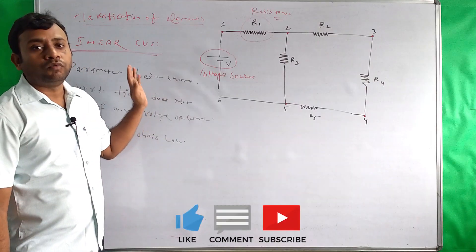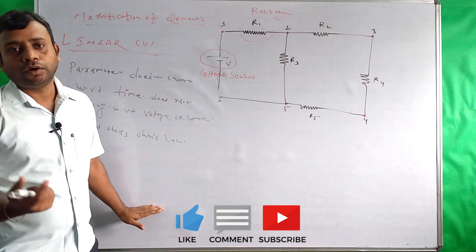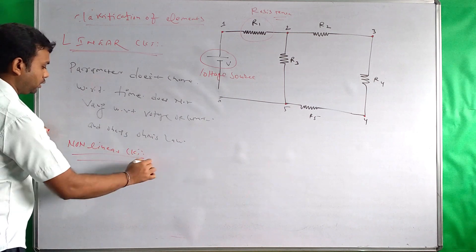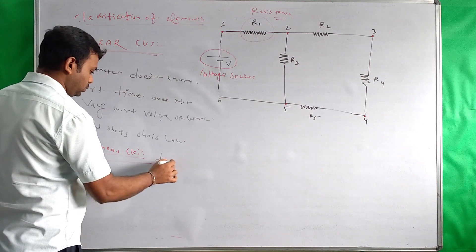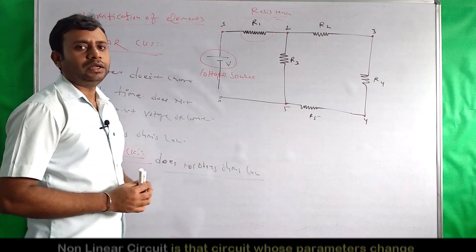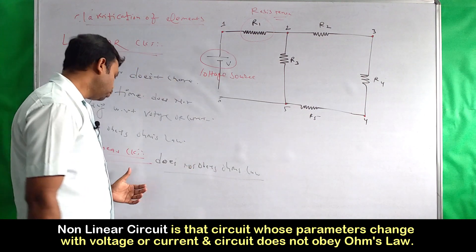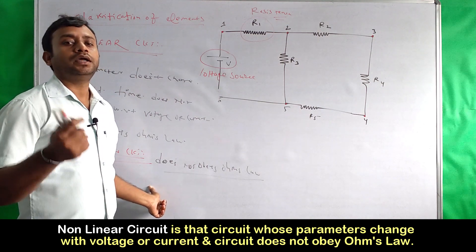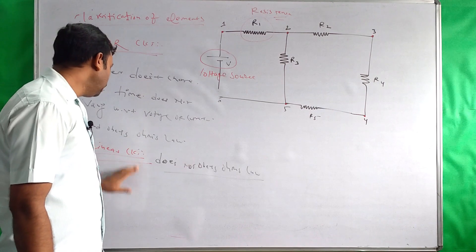Definitely hum soch sakte hain ki yadi woh circuit jo Ohm's law follow kar raha hai woh linear hai, to jo circuit Ohm's law follow nahi karega, usko hum non-linear circuit bolenge. Non-linear circuit woh circuit hote hain jo Ohm's law ko follow nahi karte. Saath hi unke parameters time ke saath changeable hote hain aur parameters voltage aur current variations ke saath vary kar sakte hain. Yeh hai hamara linear aur non-linear circuit ke baare mein.